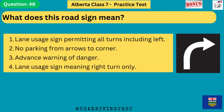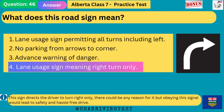What does this road sign mean? 1. Lane usage sign permitting all turns including left. 2. No parking from arrows to corner. 3. Advance warning of danger. 4. Lane usage sign meaning right turn only. The answer is 4: lane usage sign meaning right turn only. This sign directs the driver to turn right only. Obeying this signal leads to safety and a hassle-free drive.